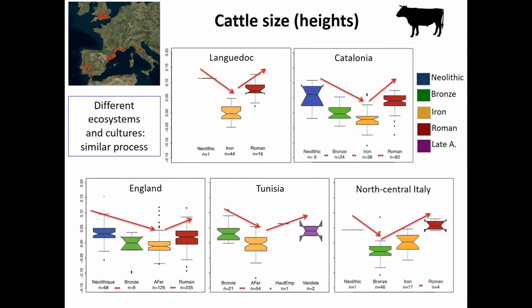It was also quite surprising to see that not only cattle frequencies, but also the size of the animals, was changing in quite a similar way. Here you have the sizes — we have one data point for the Neolithic — but then you can see some reduction in size in the Iron Age and an increase in Roman times. The same thing in Catalonia, the same in England, the same in Tunisia. And in North-Central Italy, it happens already before: from the Neolithic to the Bronze Age, and then as soon as the Etruscan settlements appear, there is an increase in size. This is happening across different ecosystems and cultures, in landscapes that look quite different — so we have similar processes not directly linked to ecology.